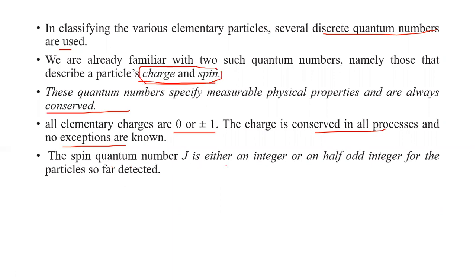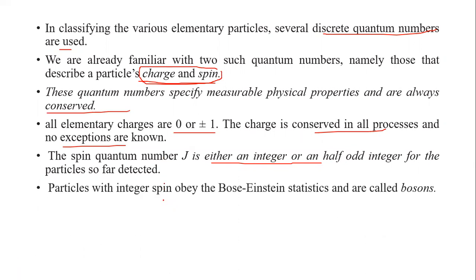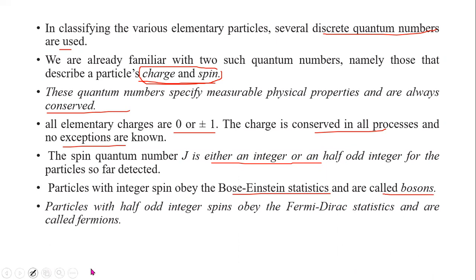The spin number J is either an integer or a half-odd integer for the particles detected. Particles with integer spin obey Bose-Einstein statistics and are called Bosons. Particles with half-integer spin obey Fermi-Dirac statistics and are called Fermions.